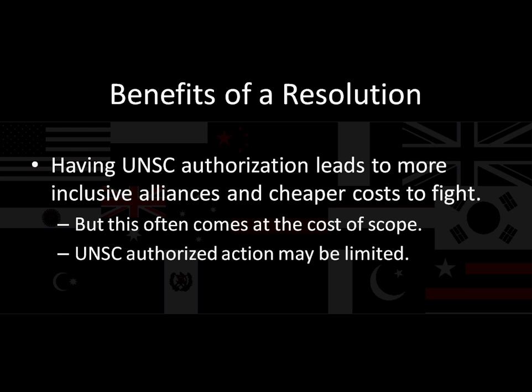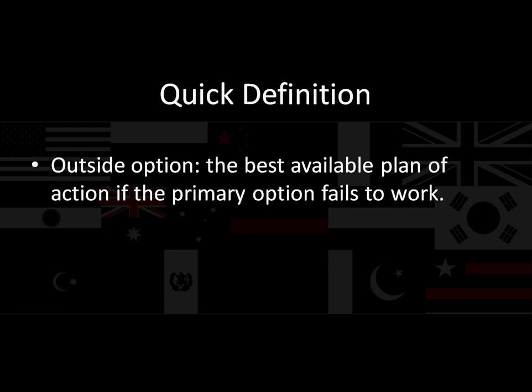Before we can analyze how this interacts with voting on the Security Council, we need a quick definition. An outside option is the best available plan of action if the primary option fails to work. In the context of a Security Council resolution, the outside option for the United States is what it would do if the Security Council resolution did not go through.